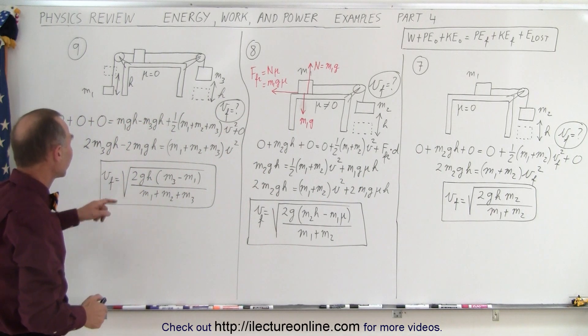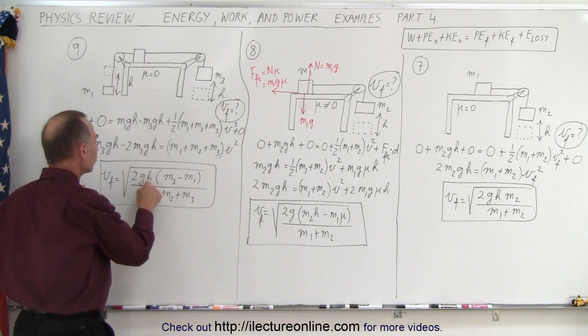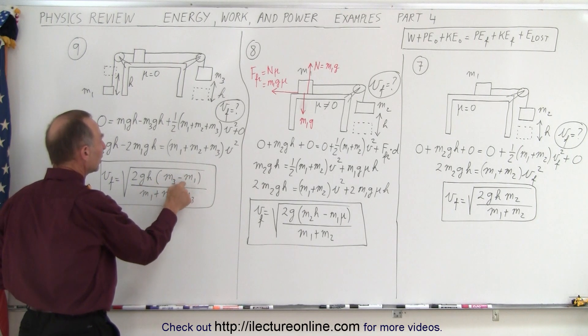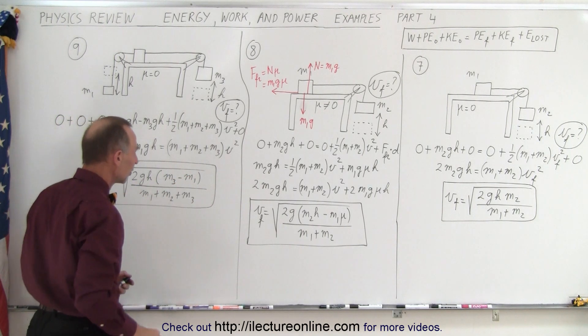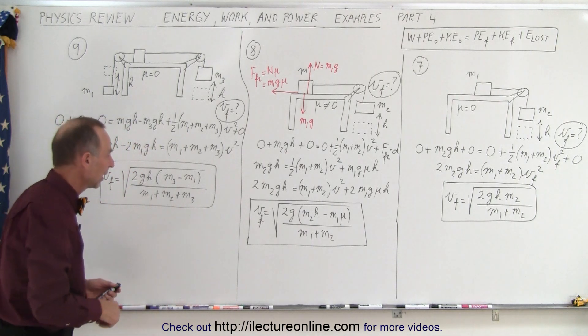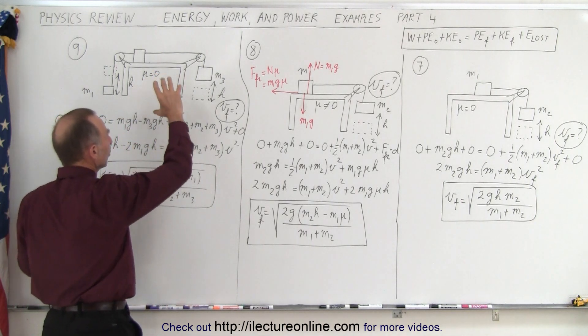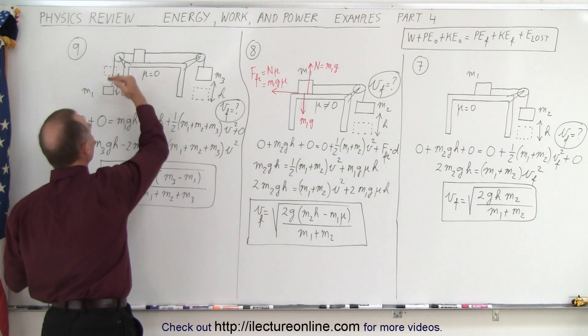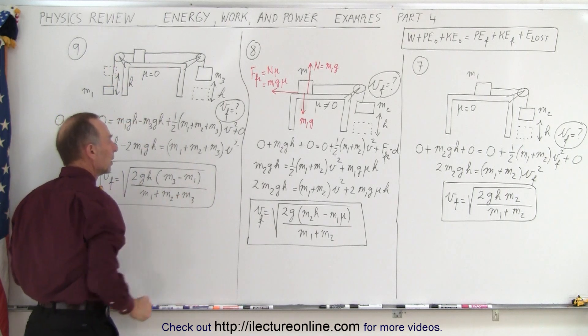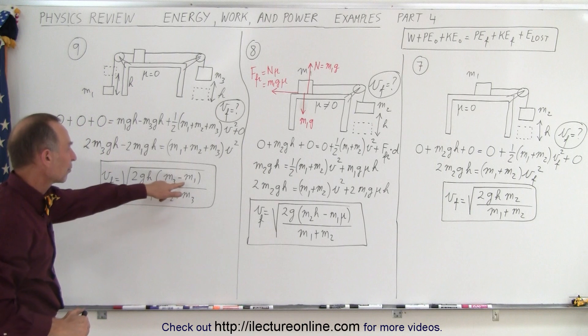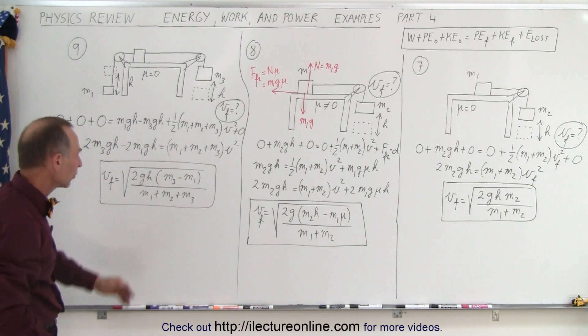Solve that for v. Notice again we get the square root of 2gh. But in the numerator we have m3 minus m1, in the denominator the sum of all the masses in the whole system. m3 is what takes the whole system to move. m1 you have to pull it up, so you lose some potential energy due to the fact that you have to pull m1 up as m3 goes down.